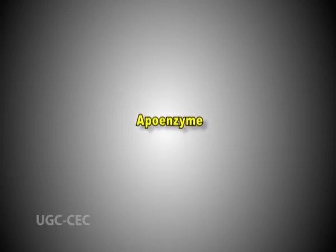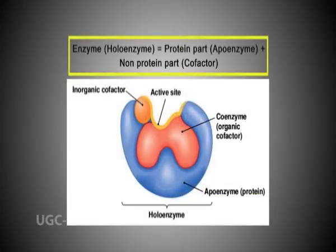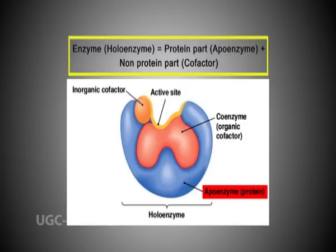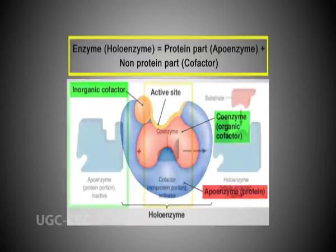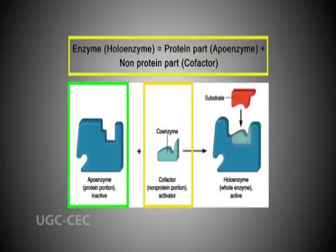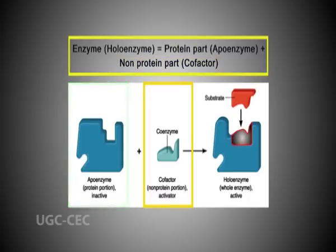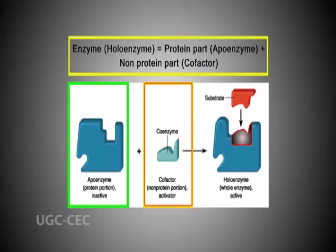Apoenzyme. An apoenzyme is an enzyme that requires a cofactor for its biological activities. That is, an apoenzyme is an inactive enzyme, and activation of an apoenzyme occurs only when binding of an organic or inorganic cofactor takes place. The protein part called apoenzyme is purely protein in nature but enzymatically non-functional — that is, apoenzymes are unable to act as an enzyme. Thus, in order to get it functional, an apoenzyme needs another non-protein part called the cofactor.